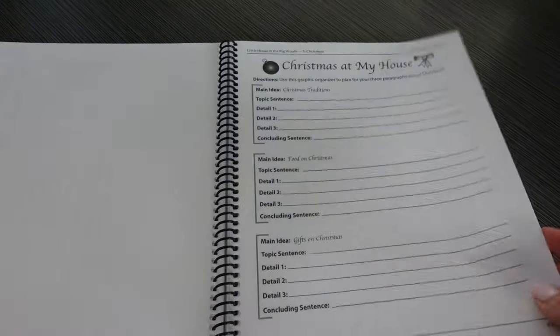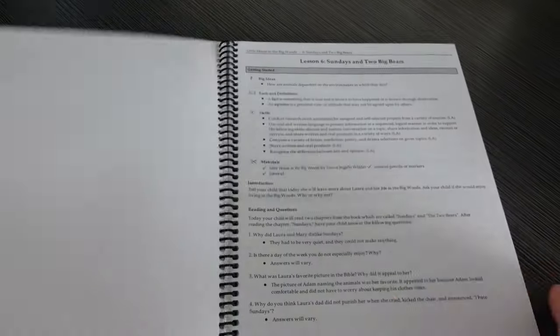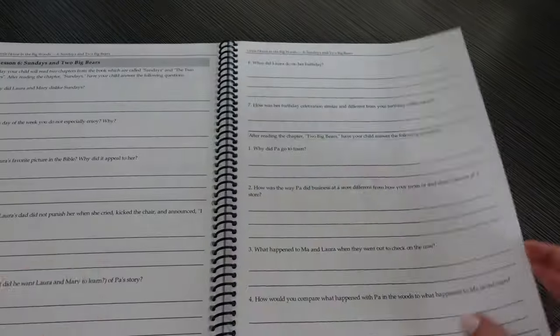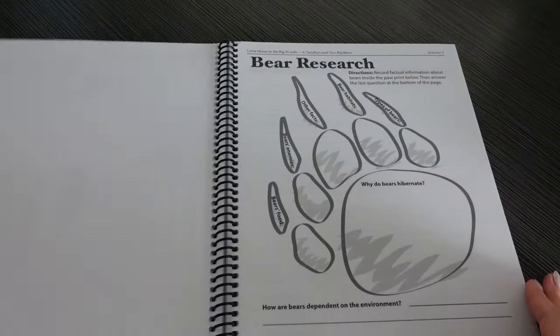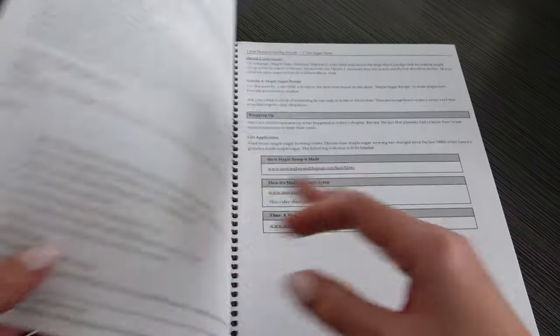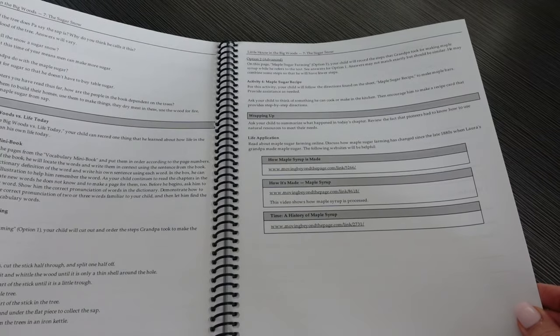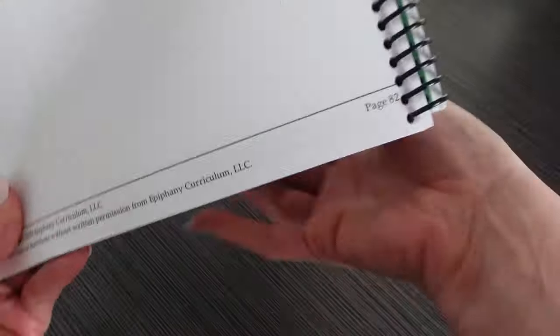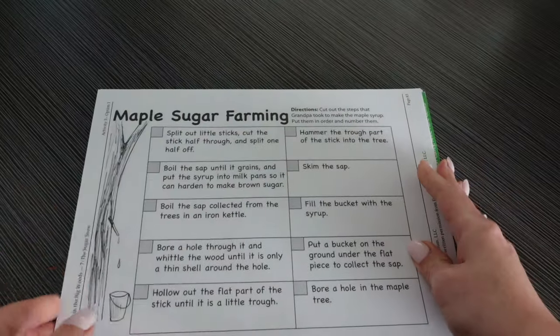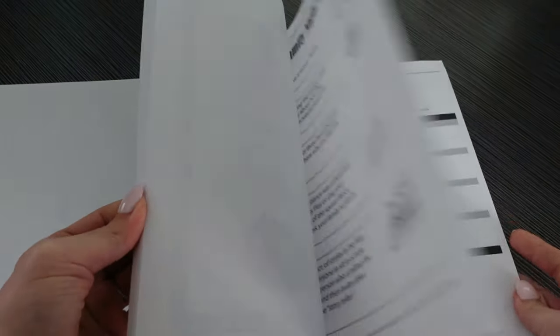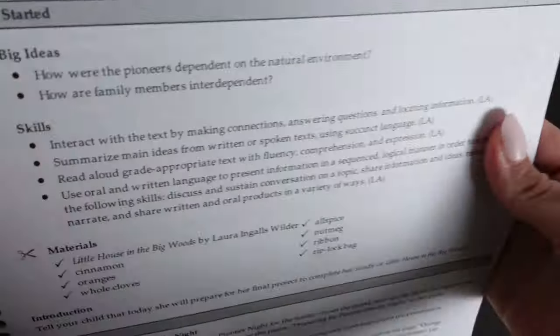There is a lot of vocabulary in this. There are different aspects regarding I think maple leaves, maple sugar. So there's recipes. I think the thing that I really love the most about Moving Beyond the Page, which you're probably going to hear me say a ton in this video, is the variety. So even though this is just language arts, there's science elements, there's social studies elements, there's home economics. It's just so fun. And every unit does end with a final project, and they're always different. And this one is a pioneer family night, which looks like so much fun.